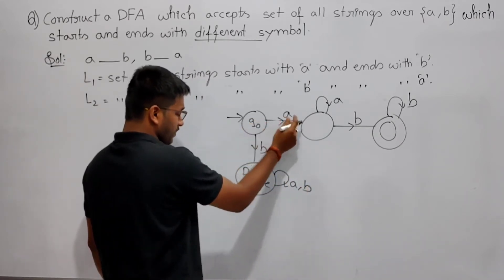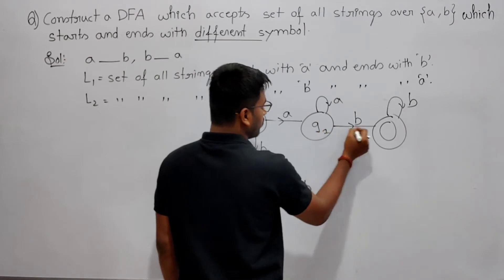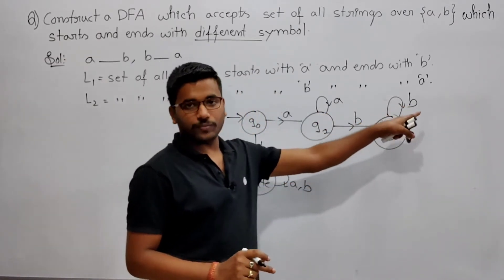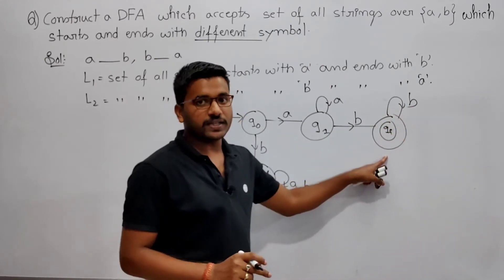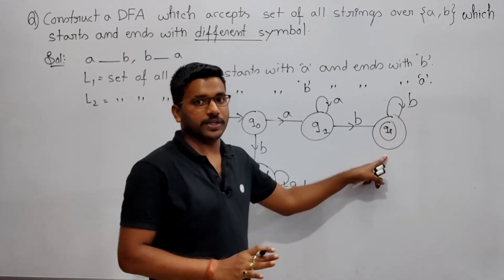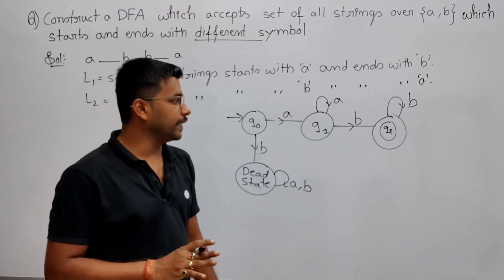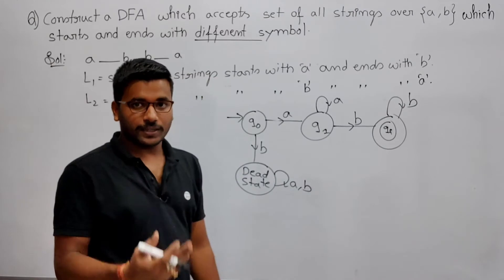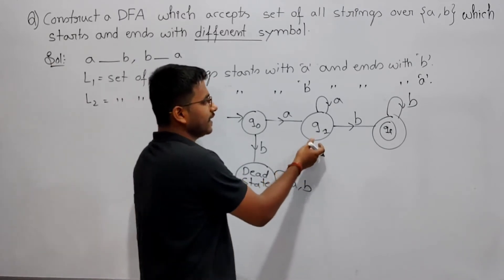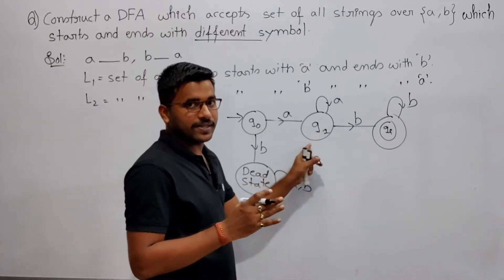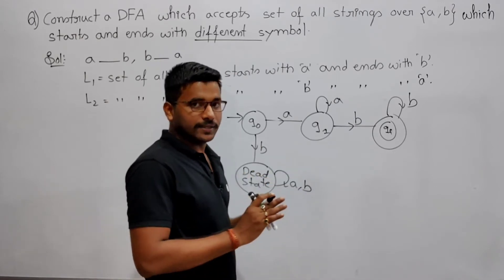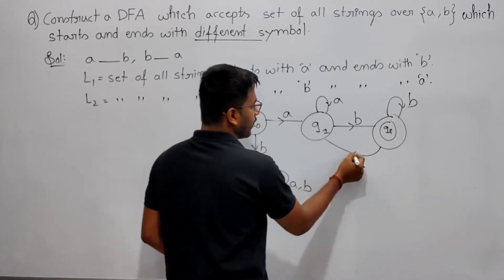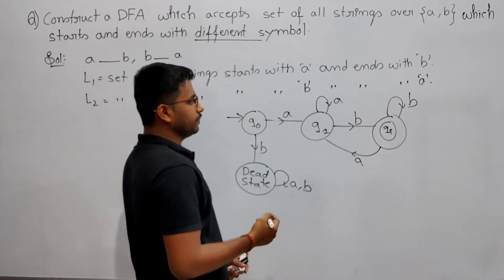For the initial state I have given transitions on a and b. For the next state I have given transitions on a and b. For the final state I have given the transition on b. When after reaching the final state — meaning the string ends with b — if you are getting a again, it means it is no more ending with b, so it comes back to the middle state. This state confirms you have already started with a; now check whether it is ending with b or not. If you get a you come back here, and again check whether it ends with b.